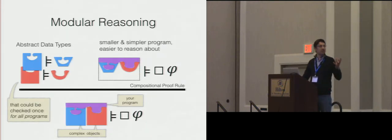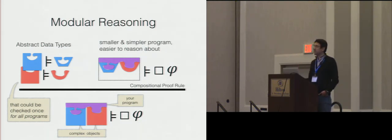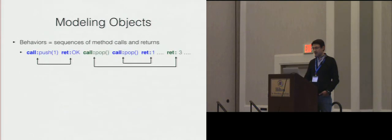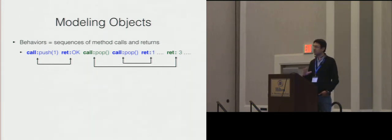As a general principle, when we want to reason about a program that uses several objects, in order to gain scalability, the verification problem can be decomposed: first, establishing that those objects implement some given abstract data types, and then checking whether the client code satisfies the property we want using these abstract specifications, instead of the complete implementations. I will say a little bit about what we mean by an object implementing an abstract data type, considering definitions that work for both concurrent and sequential objects, to introduce the motivation of our work.